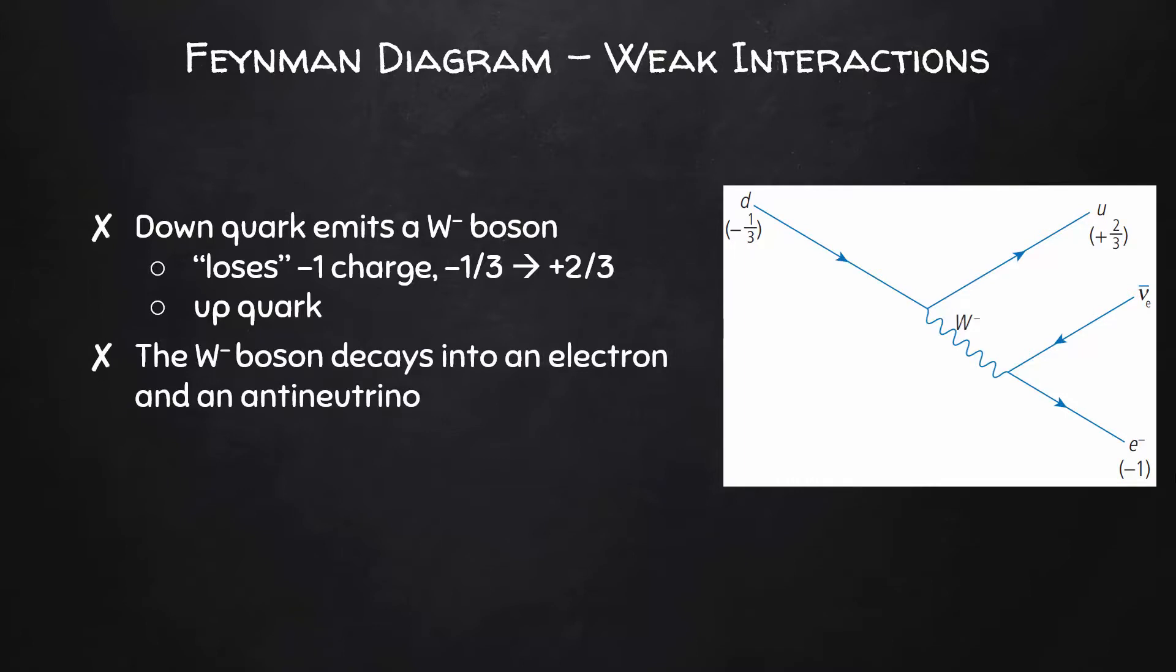The W minus boson then decays into an electron and an anti-neutrino. In this second step of the interaction, we can see that charge is conserved because the W boson has a charge of negative one and the electron coming out of the interaction has a charge of negative one and neutrinos are neutral.